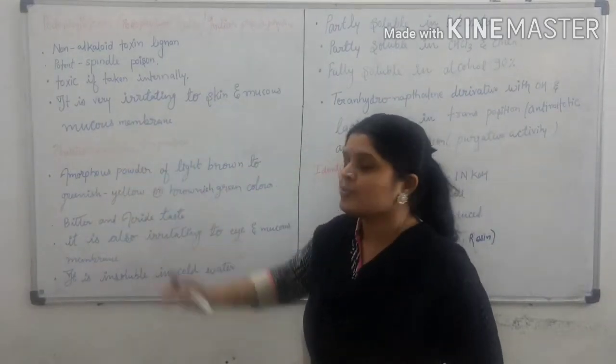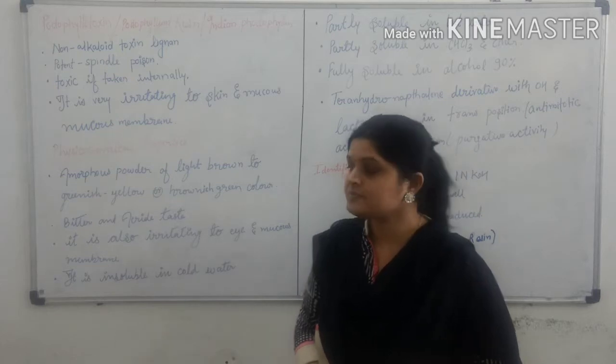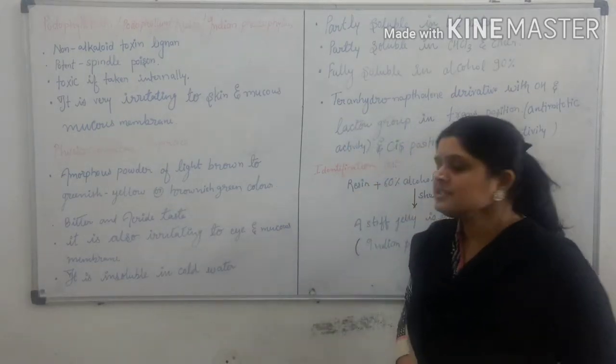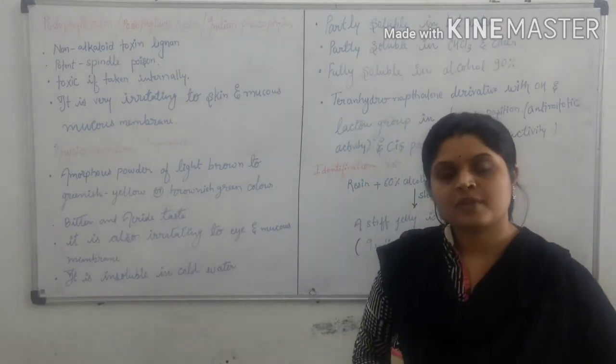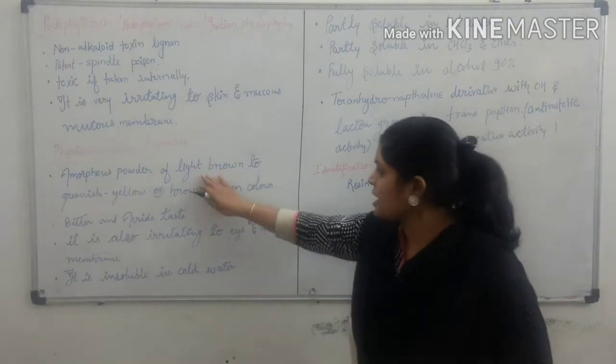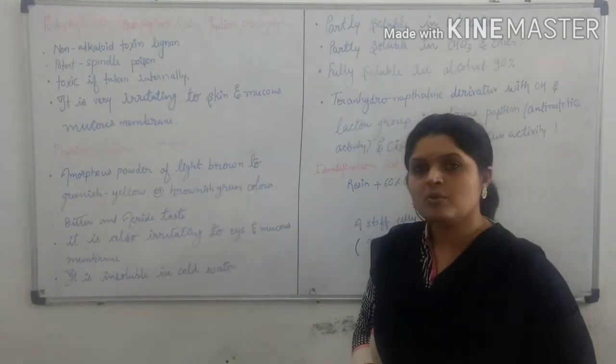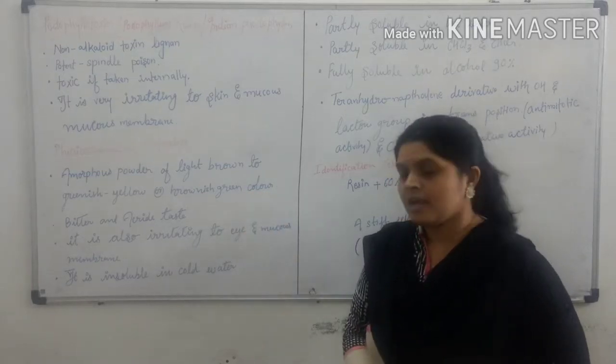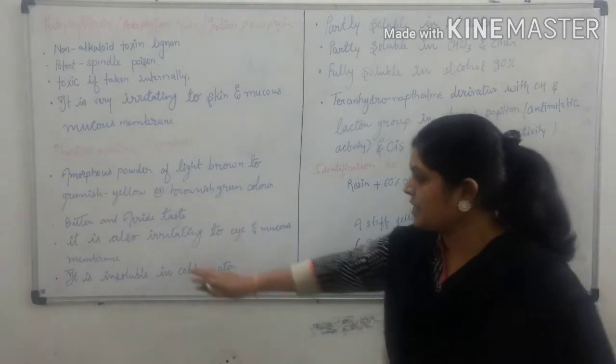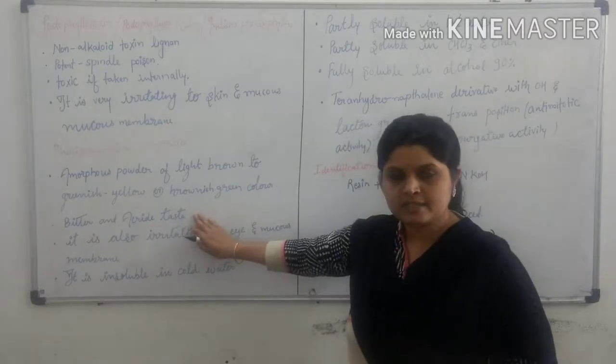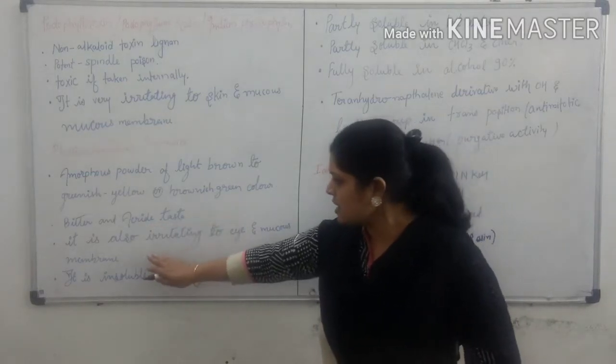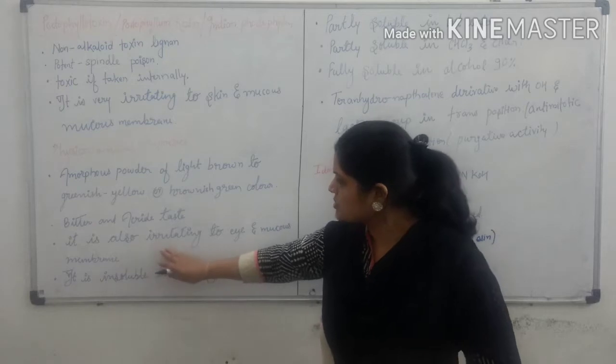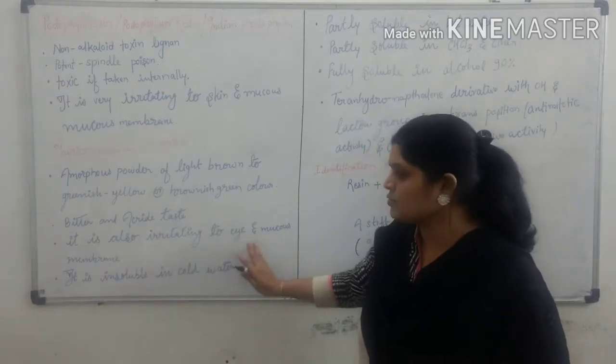Physical chemical property of podophyllotoxin: It is an amorphous powder, light brown to greenish yellow or brownish green in color. It is bitter and acrid in taste.